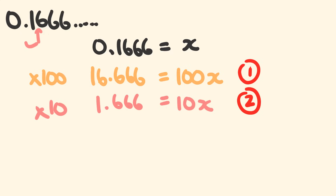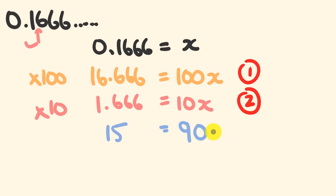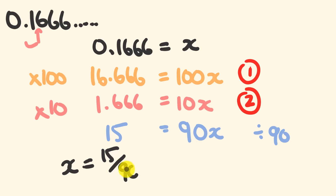So we have two equations and we subtract equation two from equation one. 16.6666 minus 1.6666 is equal to 15. This equals 100x minus 10x, which is 90x. We divide both sides by 90 to get x equals 15 over 90. This simplifies down — 15 goes into both — giving x equals 1 over 6. So 0.16666... is equal to 1/6.